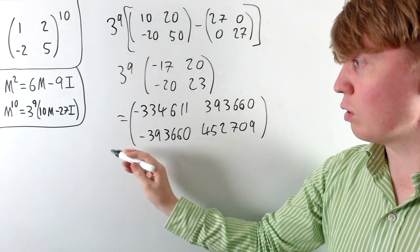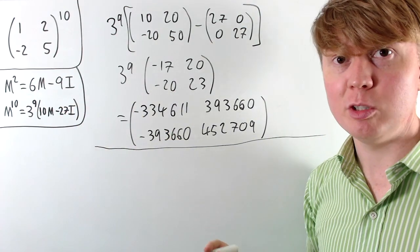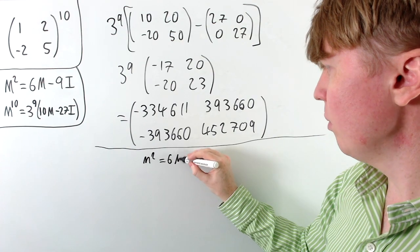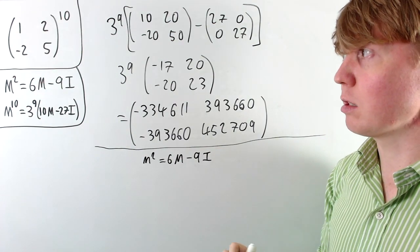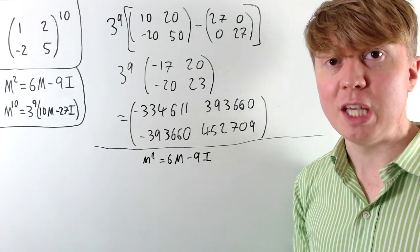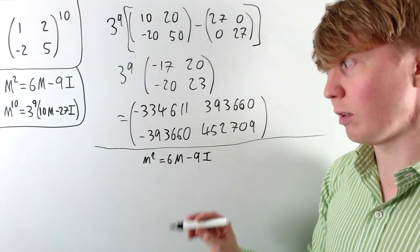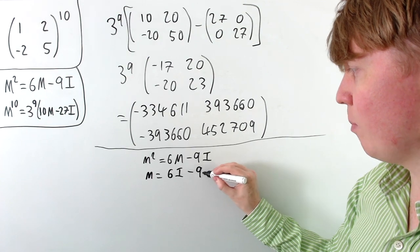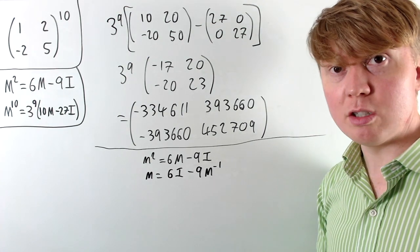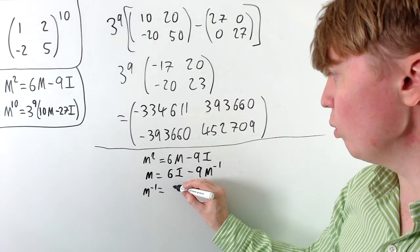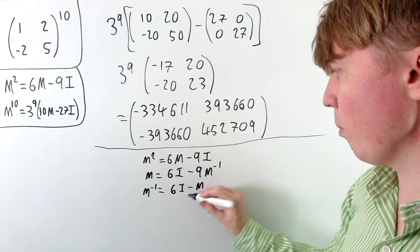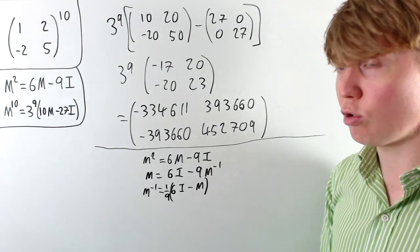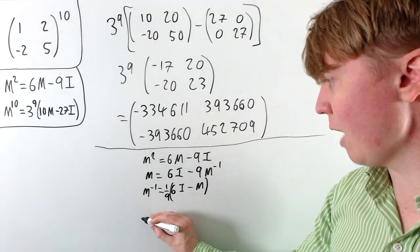This method can also be extended to large negative powers using the Cayley-Hamilton theorem. Starting with M squared equals 6M minus 9I, we multiply through by M inverse (assuming it exists, which it must be for negative powers to be well defined). This gives M equals 6I minus 9 times M inverse, and rearranging, the inverse of M equals (6I minus M) divided by 9. This gives a nice way to work with negative powers using only scalar multiplication and addition.